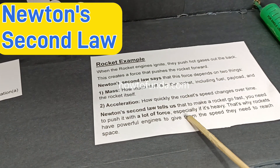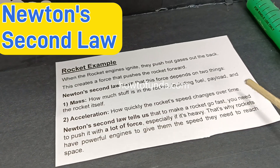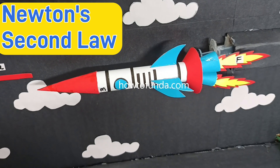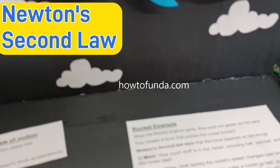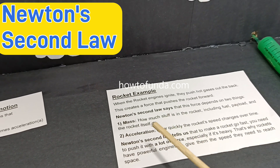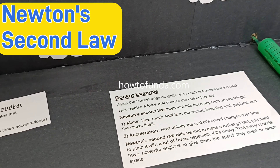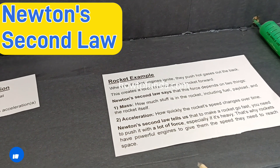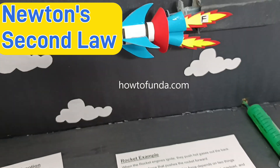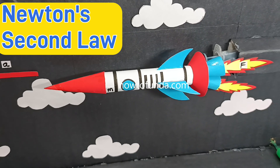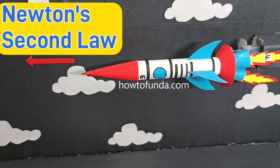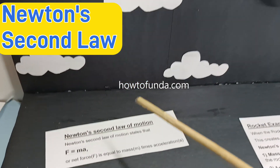Newton's second law tells us that to make a rocket go fast, you need to push it with a lot of force. To move fast, a rocket must have a lot of force, which depends on how much mass it has and how much acceleration we give it. Acceleration is provided by powerful engines that give the rocket the speed it needs to reach space.